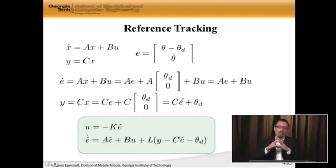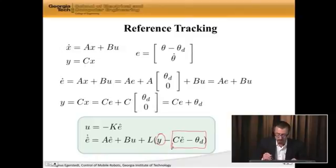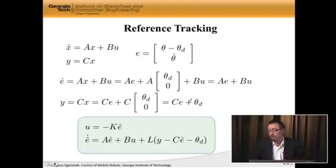So u is minus K, not e because we don't know e, but e hat, which is our estimate of e. And e hat dot has the standard predictor part and it has the corrector part. And the corrector part is the current output minus what the output would have been. And the only difference here is I have to keep track of this little extra theta desired. But it's no big deal. It acts exactly in the same way. So this is now my control structure. And instead of me talking about it, why don't we move on to see an actual humanoid robot executing this control strategy?